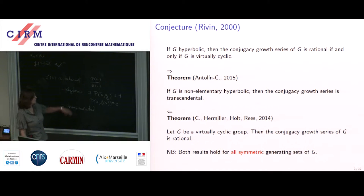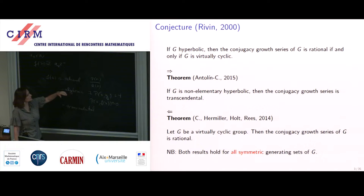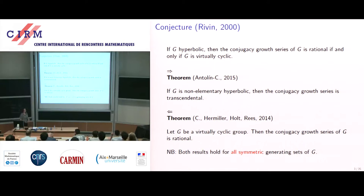The Riven conjecture is even stronger than originally predicted: not only is the conjugacy growth series not rational, it is not even algebraic — so it is transcendental. The results hold for all symmetric generating sets; one could drop the symmetric condition, but it's not worth the effort to write the details.